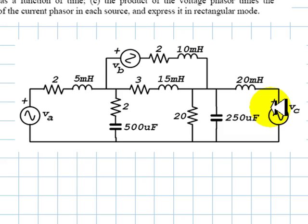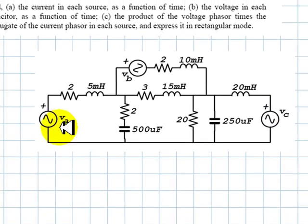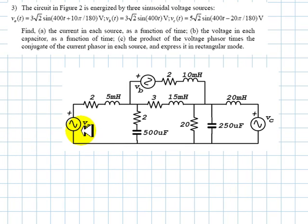We begin by representing those sources as phasors: 3 with 10 degrees, 3 with 0 degrees, and 5 with negative 20 degrees.